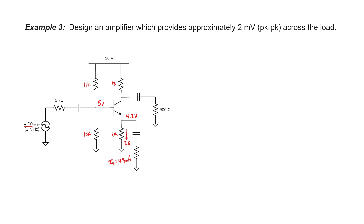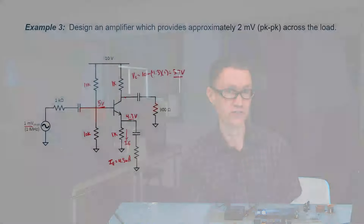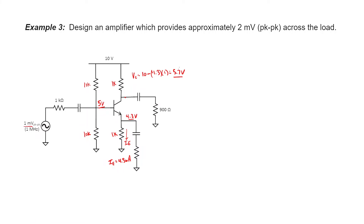If I put a 1 kilohm resistor at the collector as well, then my collector voltage is going to be 10 minus 4.3 times 1, or 5.7 volts. That properly biases the transistor in the forward active mode because 5.7 is greater than 5, which is greater than 4.3. Now, if I have 2 millivolts across the load, am I in danger of saturating the transistor? Well, if we add 1 millivolt to 5.7 volts, the voltage is just going to rise to 5.701 volts — I'm not going to deviate very far from my DC bias point. There's no danger that this voltage will get too low and saturate the transistor.